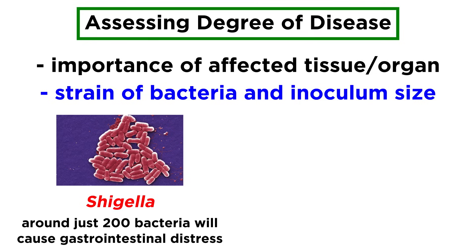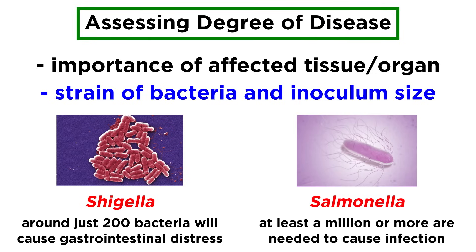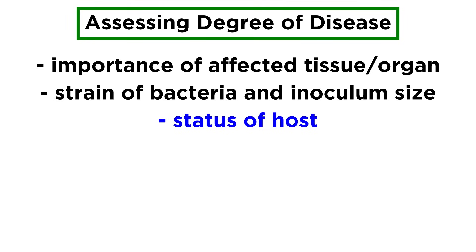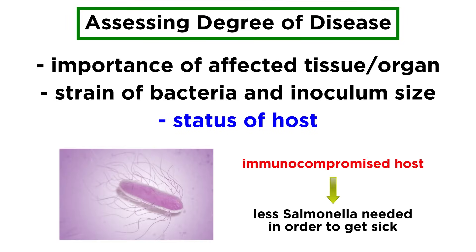Like around 200, to cause serious gastrointestinal distress, while others, like Salmonella, might require several orders of magnitude more inoculum — like a million or more — to cause a serious infection. However, the particular host factors into this equation as well. If you are immunocompromised, for instance, it might take much less Salmonella to make you sick.